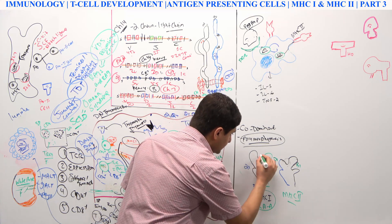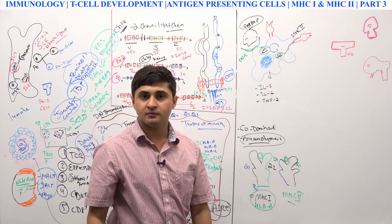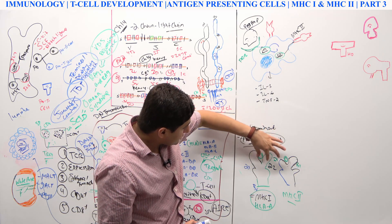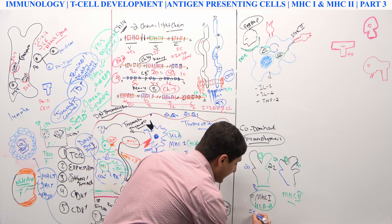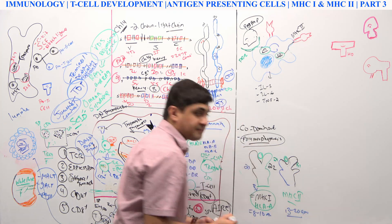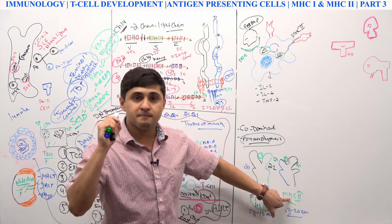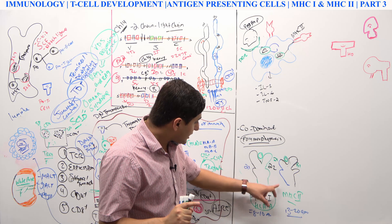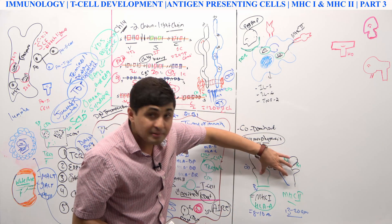This area right here — this groove area — is where the antigen fits in. The antigens that fit here are peptides. MHC1 is able to hold from 8 to 10 amino acids, and MHC2 is able to hold from 13 to 20 amino acids of the peptide. T cells do not recognize larger proteins — they only recognize peptides presented by antigen presenting cells.